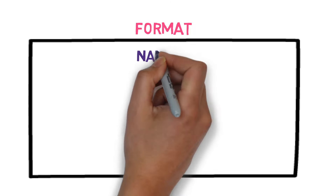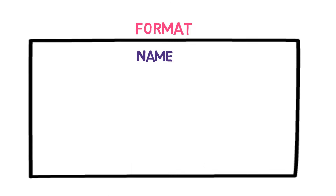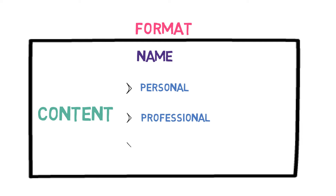Now that you are clear about the difference between biography and autobiography, let's learn the format of biosketch writing. Biosketch writing is divided into two sections. First, write the name of the person for whom you are writing the biosketch. Second, content — write the summary of the person's personal, professional, and social life.